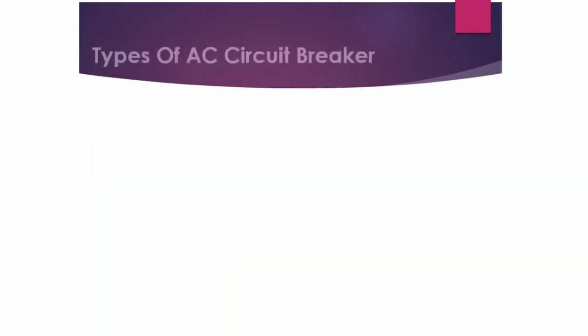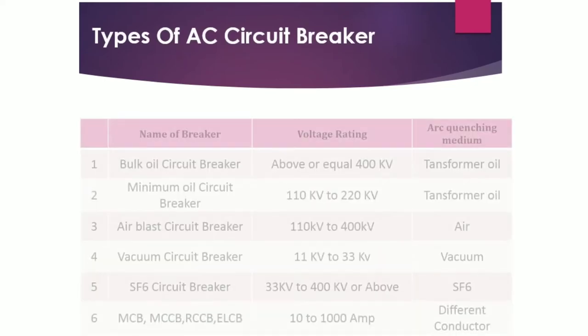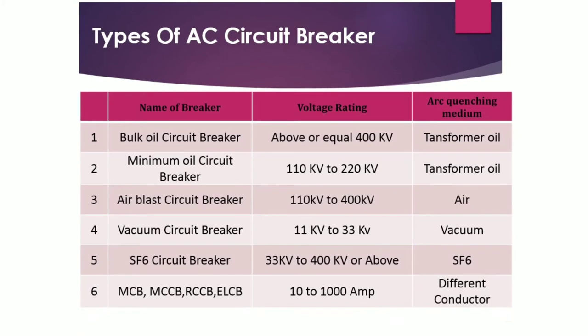There are six types of circuit breakers in common application. First, the bulk oil circuit breaker, rated at above or equal to 400 kV, using transformer oil as the arc-quenching medium. Second, the minimum oil circuit breaker, with a voltage level of 110 kV to 220 kV, also using transformer oil as the arc-quenching medium.